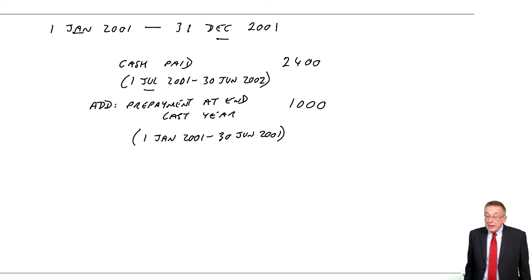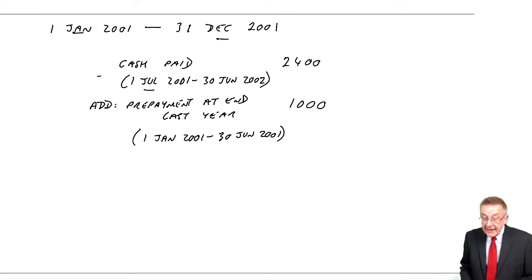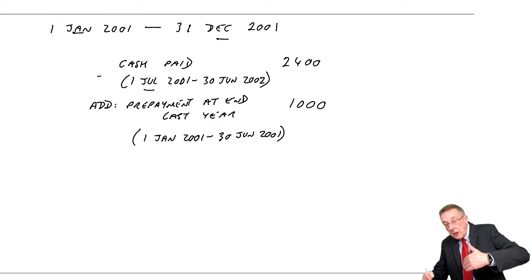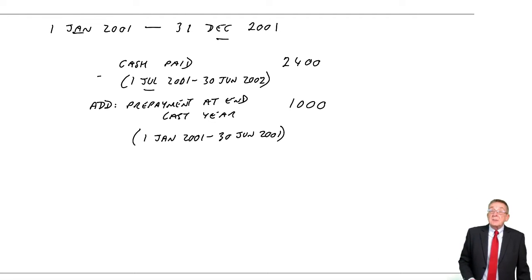It was the prepayment at the end of last year. At the end of last year, we'd already paid for 1st January 2001 to 30th June. If you look back, we calculated the amount and it was $1,000. So the cost for our first six months was that $1,000 we'd overpaid last year.